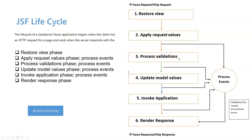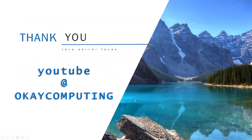The fourth phase is Update Model Values, where JSF updates your bean attributes with the user input values. The fifth phase is Invoke Application, where JSF decides what to do with the process - whether to render the output on the same page or navigate the user to the next screen. The sixth and final phase is Render Response, where JSF renders the response either on the same screen or navigates the user to the next screen.